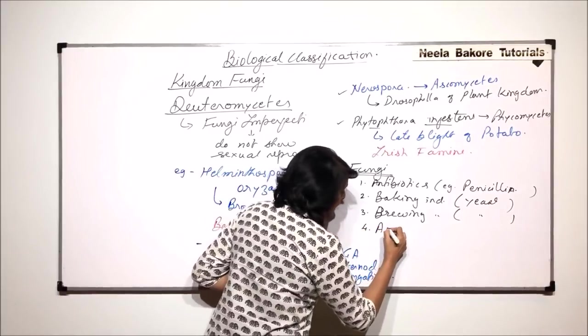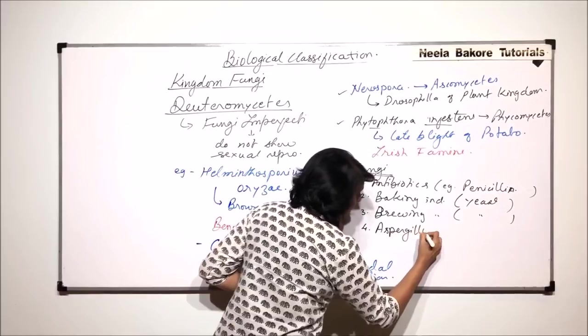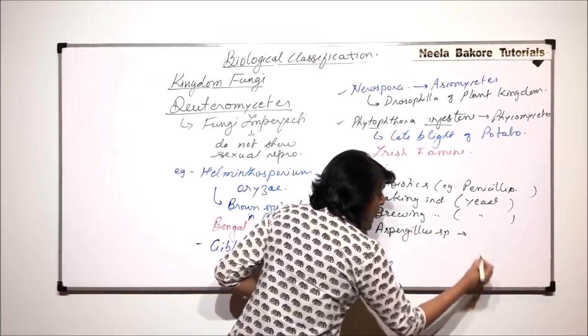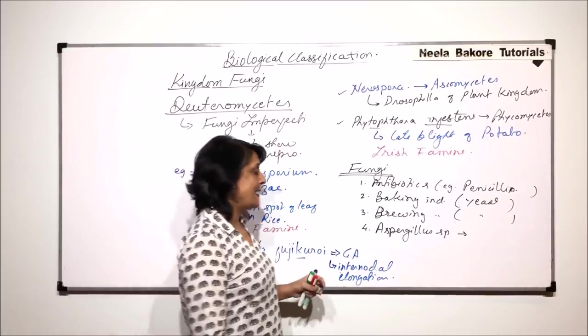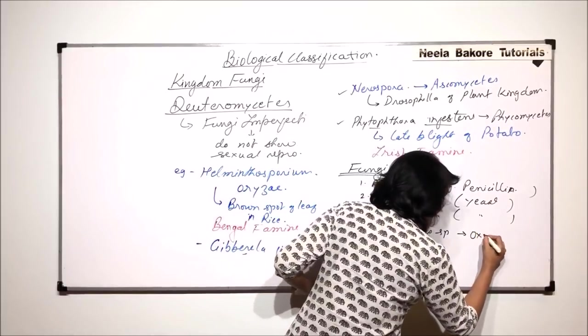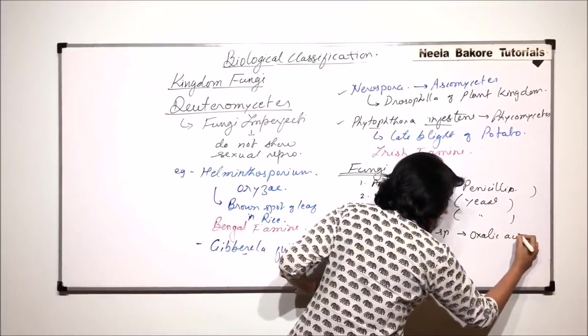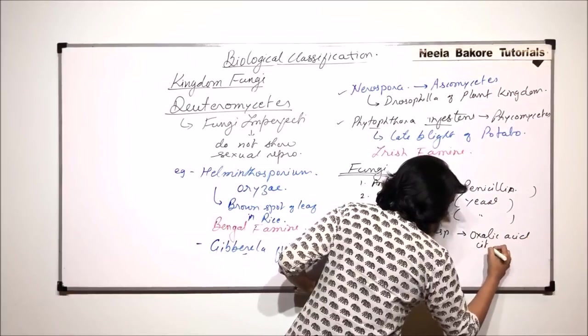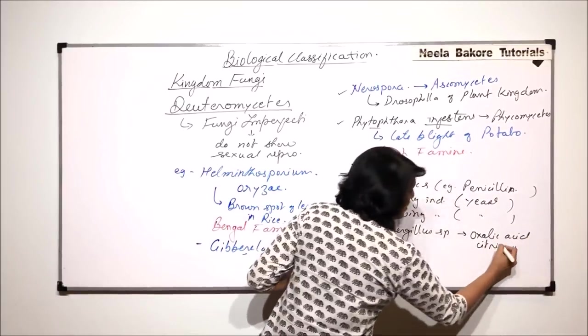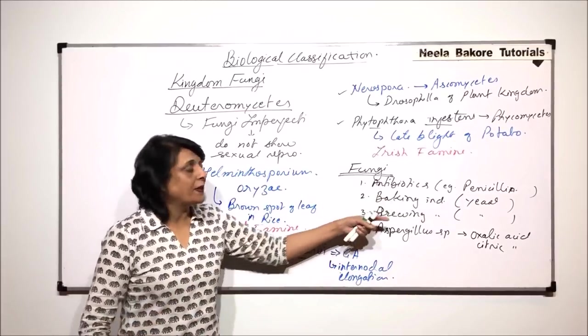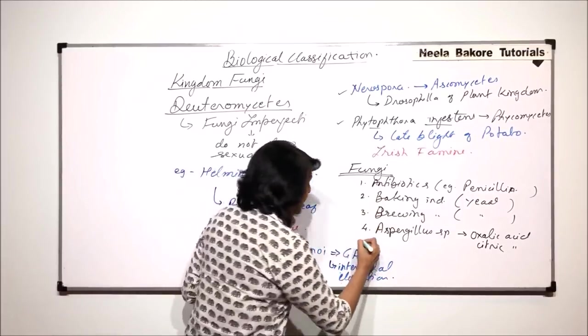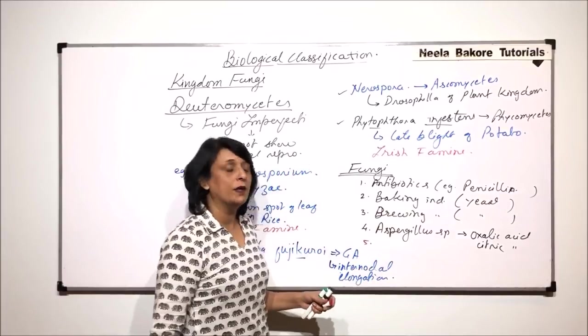There are a few more fungi which are used. For example, Aspergillus species are used for the production of certain organic acids like oxalic acid and citric acid. These are the fungi which are used for obtaining certain substances, and then there are some fungi which are edible fungi.